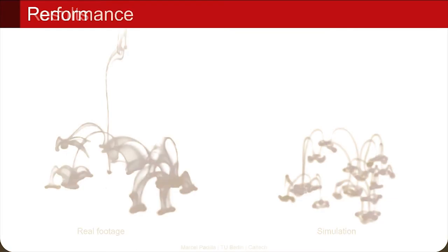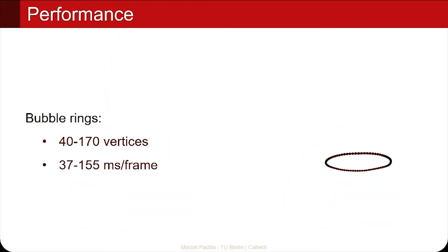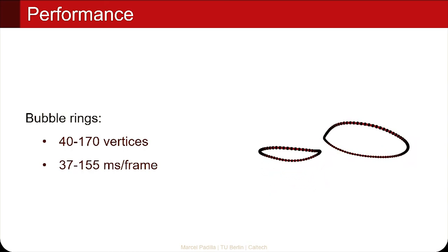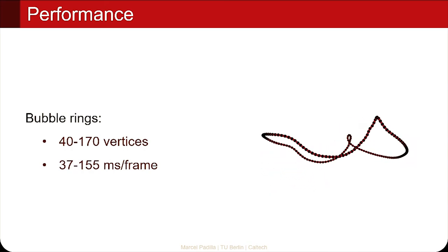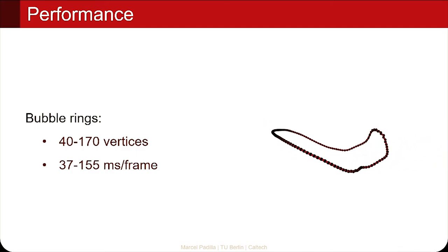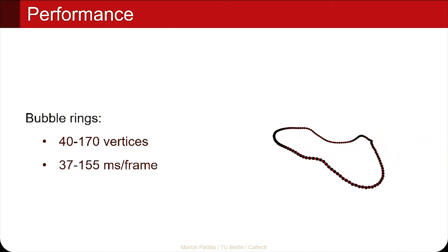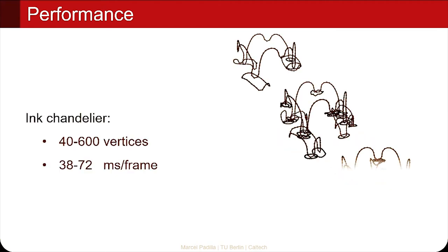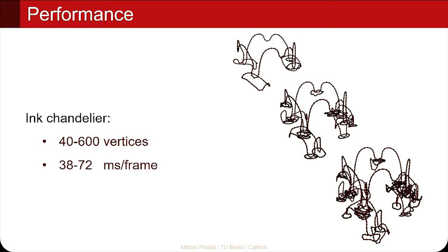Regarding performance: for bubble rings we have between 40 and 170 vertices, and the number of vertices changes because we have a resampling method that resamples the curve for consistent resolution. For the ink chandeliers we have more vertices, but the computation is actually a bit faster there because we do not have to test for bubble ring reconnection.